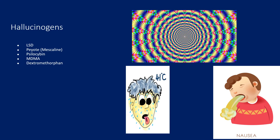Hallucinogens are going to have some sympathomimetic effects. They often can produce high body temperatures as well as hallucinations or sensory disturbances. Nausea and vomiting often accompanies these agents as well. This includes LSD, peyote, psilocybin, ecstasy, and dextromethorphan. You may have heard dextromethorphan called robo-tripping — and this is why in CVS you'll find it often locked up or not easily accessible anymore, because it's found in cough medicine.